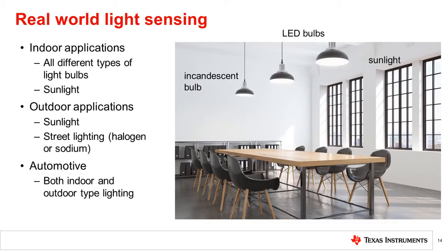Understanding the spectrums of these different types of light sources is important when we consider real-world light sensing scenarios. Shown is an indoor environment where a light sensor may be used for controlling the indoor lighting level, or in a product such as a thermostat, cell phone, or watch, for display brightness adjustment.